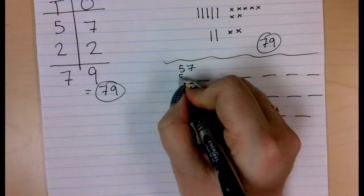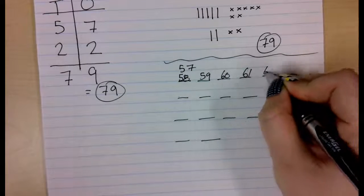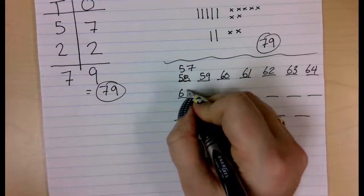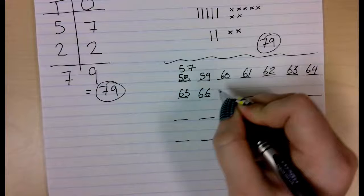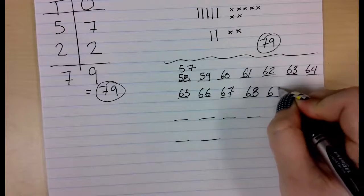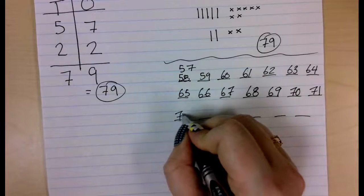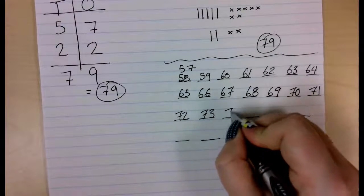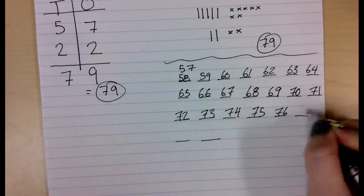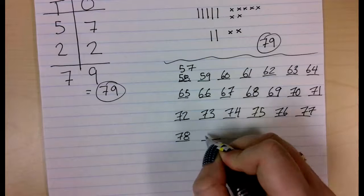I am going to fill all of those up. So 57, 58, 59, 60, 61, 62, 63, 64, 65, 66, 67, 68, 69, 70, 71, 72, 73, 74, 75, 76, 77, 78, 79.